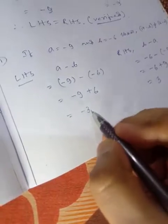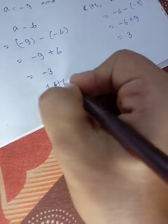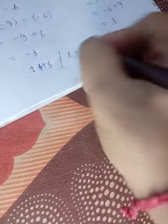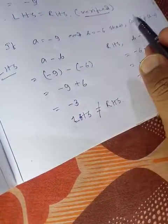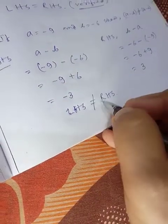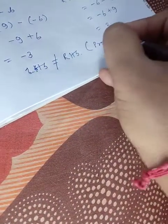Now you see this is -3, this is +3. Obviously LHS is not equal to RHS. This is our proof. So a - b is not equal to b - a, and LHS is not equal to RHS. So this is proved.